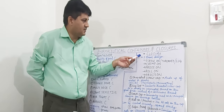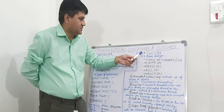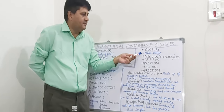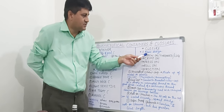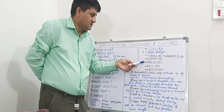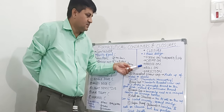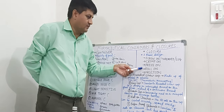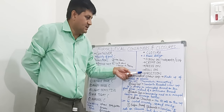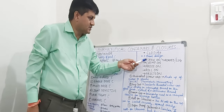The next part of containers and closures is the closures. Closures are available in five basic designs: the first is the screw-on or threaded, the second is the crimp-on, the third is the press-on, the fourth is the roll-on, and the fifth is the friction type. The screw-on or threaded closure is also available in a lug form.